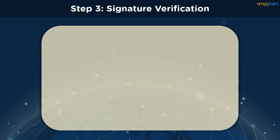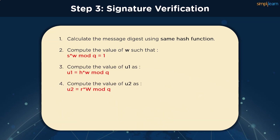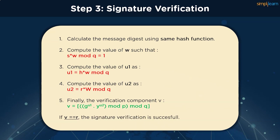Now with the third phase, we have to verify the signature. We first calculate the message digest from the received bundle by passing it through the same hash function. We calculate the values of W, U1, and U2 using the formulas shown on the screen. We then calculate a verification component to be compared with the value of R sent by the sender. This verification component can be calculated using the formula shown. Once calculated, it is compared with the value of R. If the values match, then the signature verification is successful, completing the entire process from key generation to signature generation all the way through to verification.